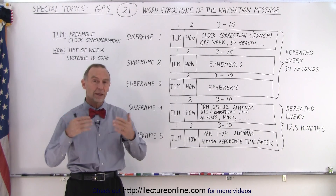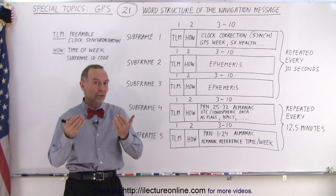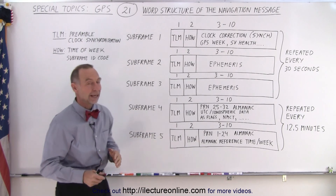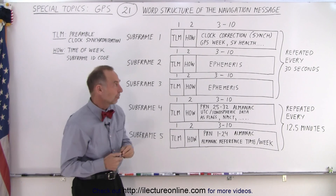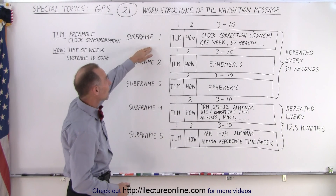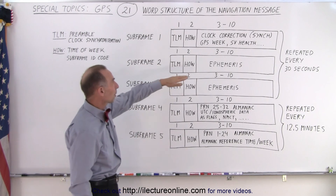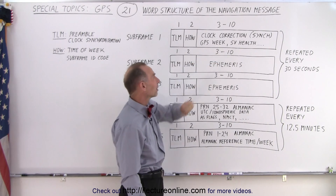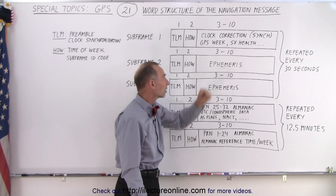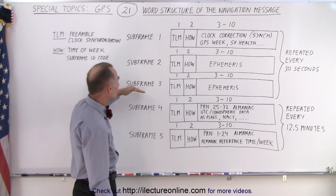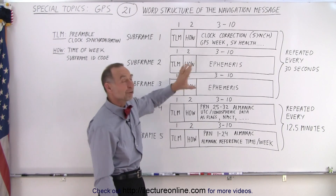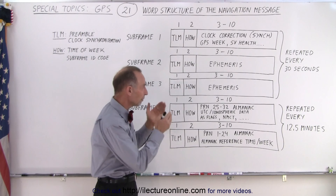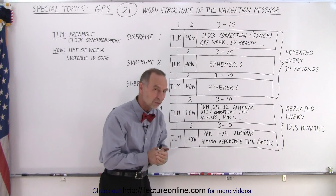Each frame is divided into sub-frames. There are five sub-frames, and they all have a specific purpose. Notice the first sub-frame primarily contains clock correction, GPS week, SV health, and so forth, so that we can sync the clock. Sub-frames two and three have specific orbital information — the ephemeris of that specific satellite. Each satellite has its own ephemeris data that it transmits.